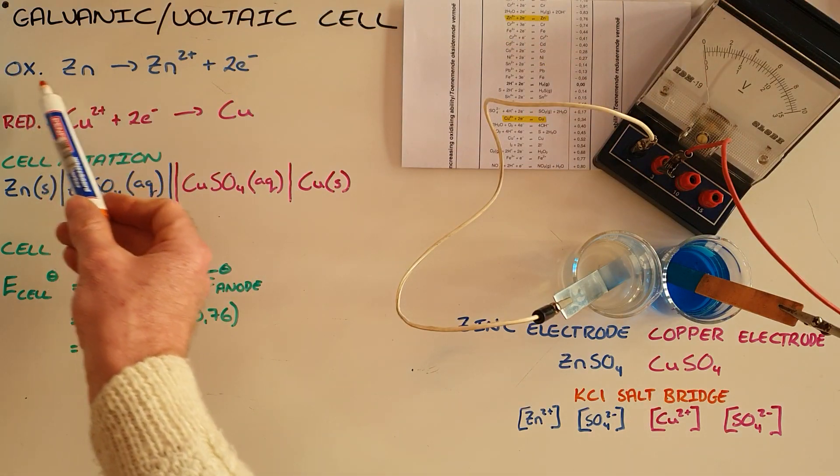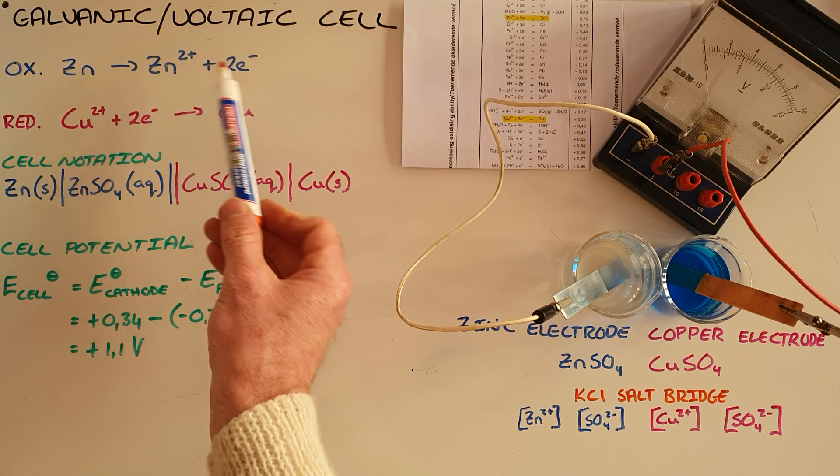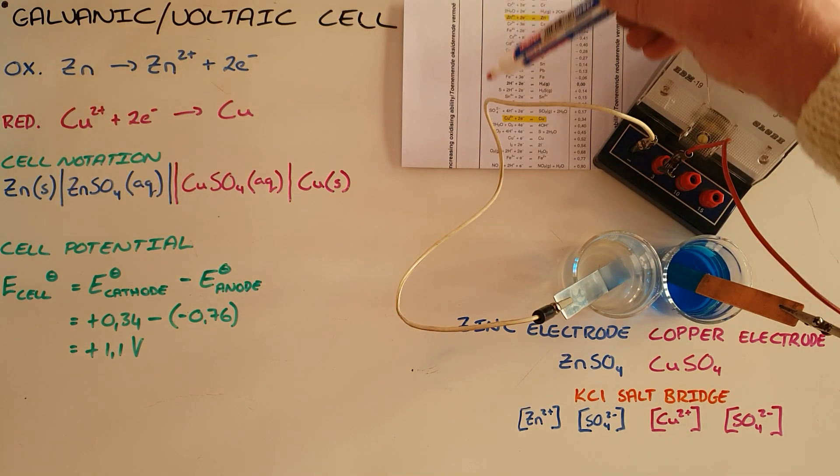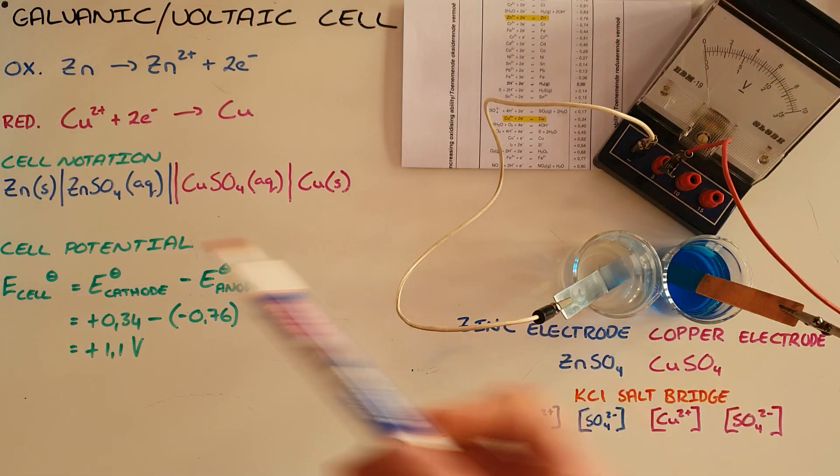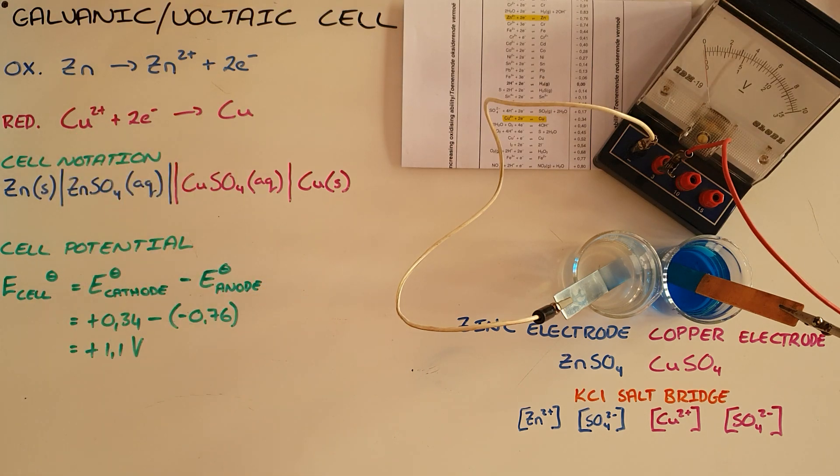Therefore our oxidation half reaction is the zinc solid breaking apart to form zinc ions and electrons. We move down the table then to see that copper undergoes reduction where it gains electrons, the copper ions gain electrons to form a copper solution.